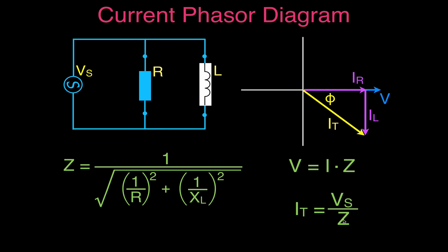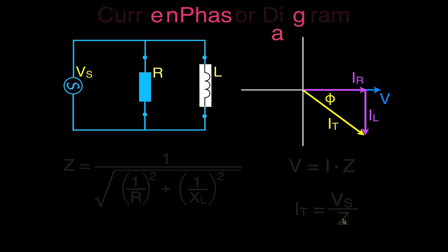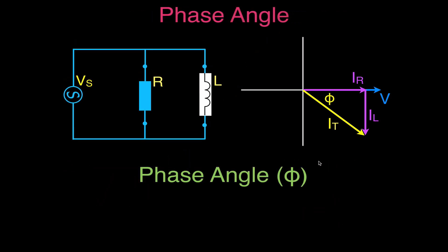The phase angle is the angle by which the voltage leads the total current. Using the current phasor diagram, if you know the resistive current I_R and inductive current I_L, they form the adjacent and opposite sides respectively. The tangent of the phase angle equals I_L / I_R — opposite over adjacent from SOH-CAH-TOA — and that gives you the phase angle.